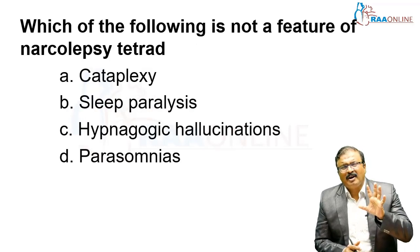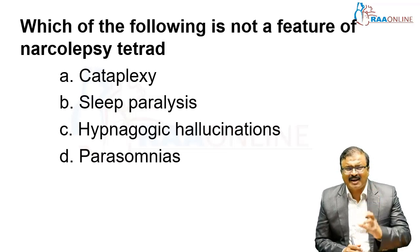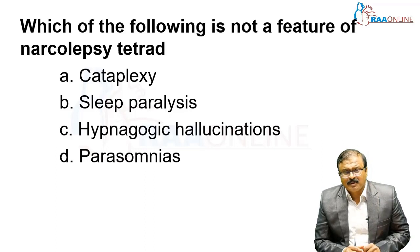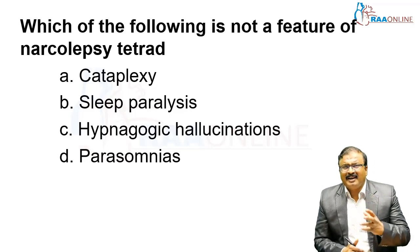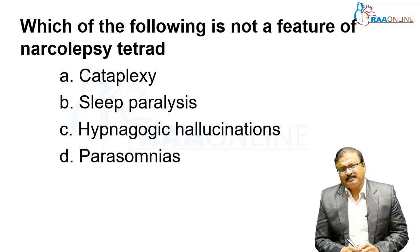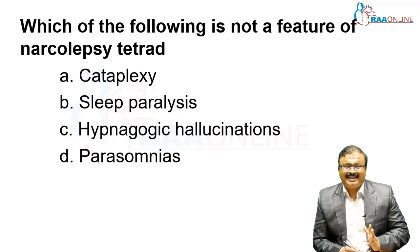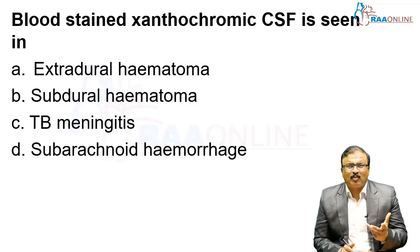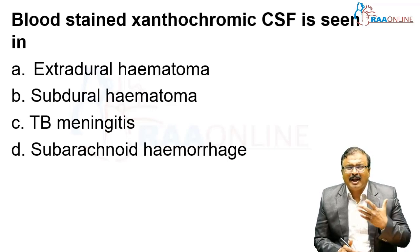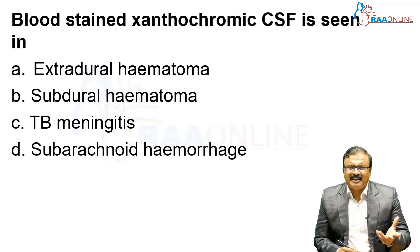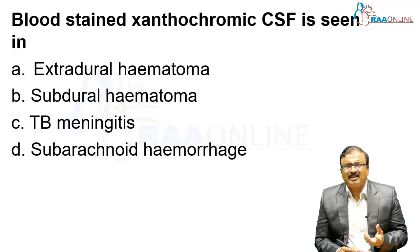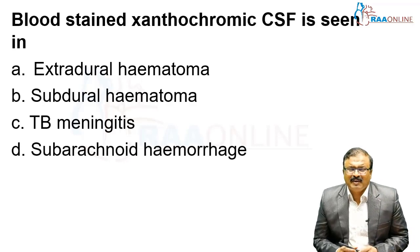Which of the following is not a feature of the narcolepsy tetrad? Narcolepsy is a specific condition characterized by sleep paralysis, recurrent attacks of sleep, cataplexy, and hypnagogic hallucinations. Blood-stained xanthochromic CSF is not a feature of narcolepsy — it is a classical feature of subarachnoid hemorrhage, sometimes described as diagnostic of it. TB meningitis has lymphocytes along with high protein and low sugar.